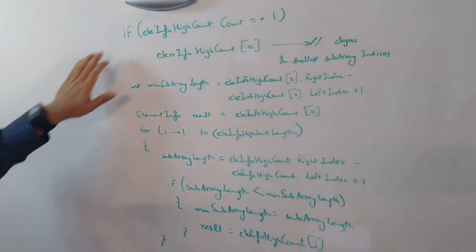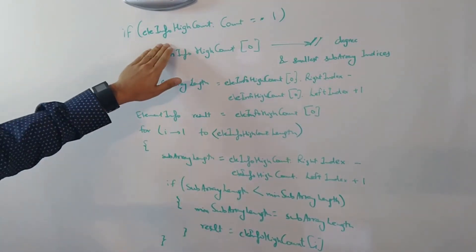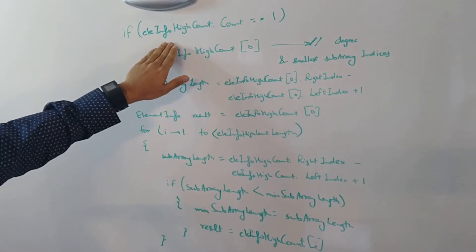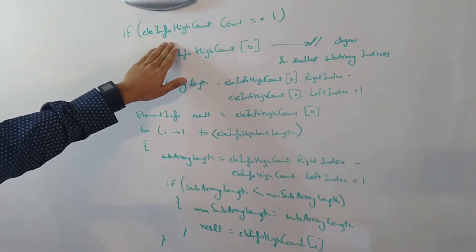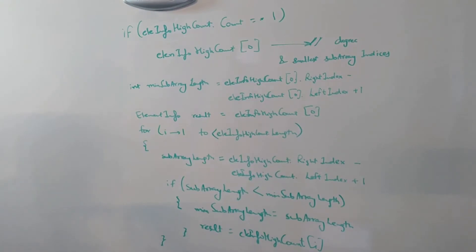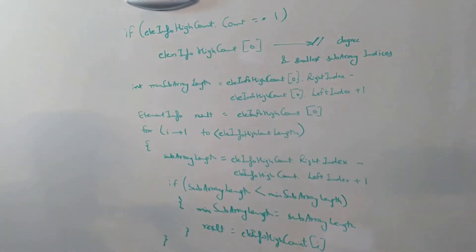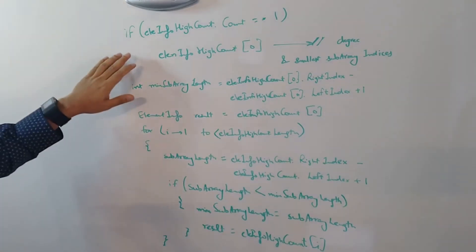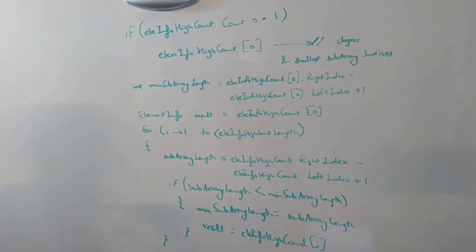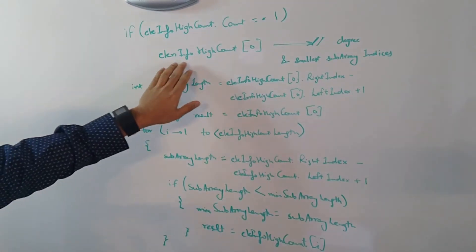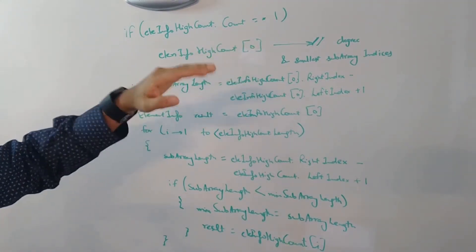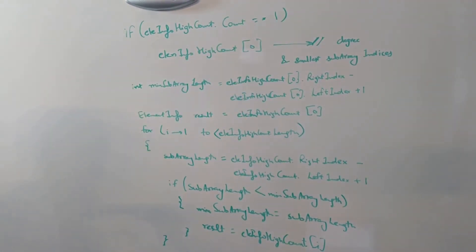So next, what we need to do is, we need to loop through this list of ele info high count and to find a subarray with minimum length. To begin with, if suppose we had only one single element in the list, then that element itself is our answer. The count inside that value will be the degree and the left index and right index will give you the minimum subarray.